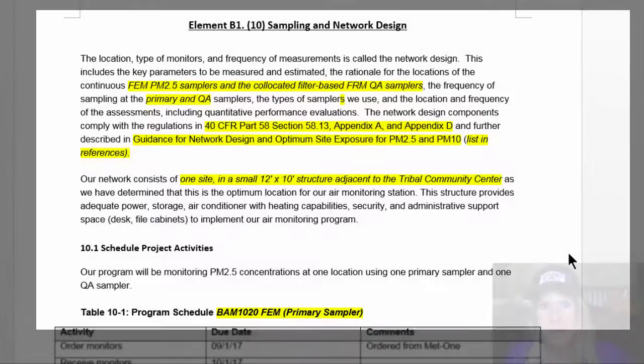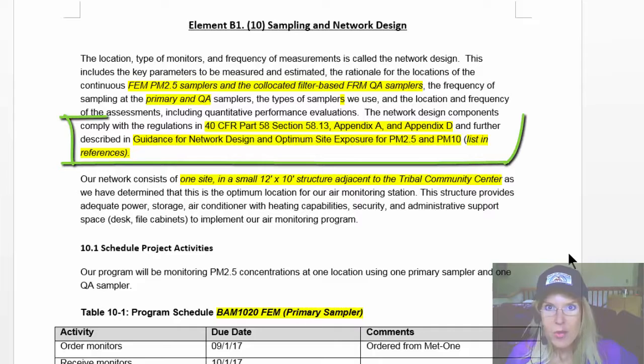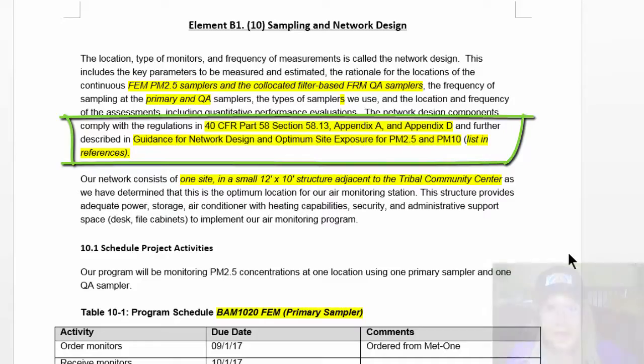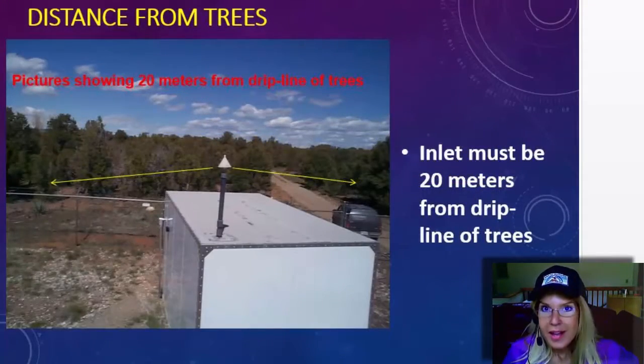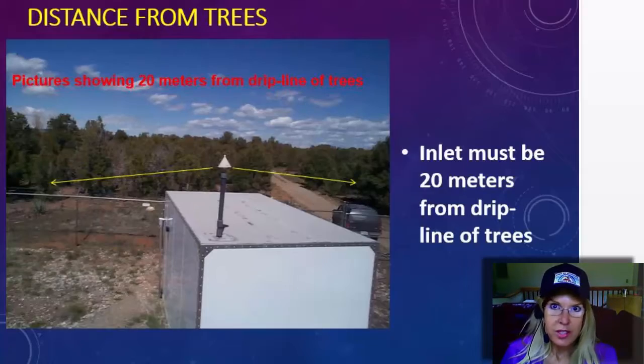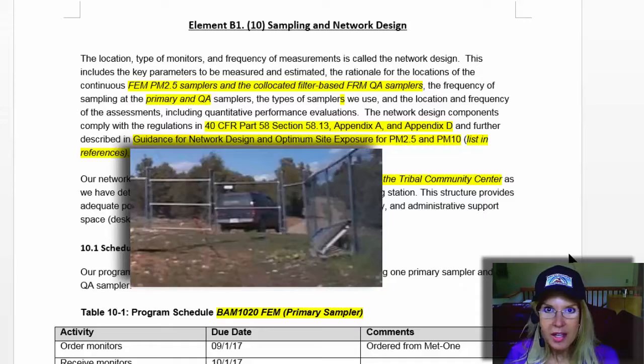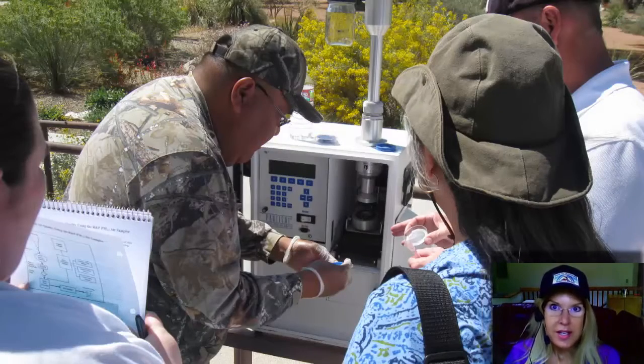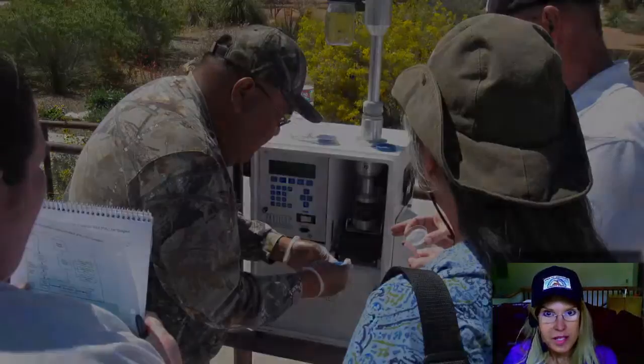So this section here describes why you're placing your monitors where you're placing them, how they meet the criteria if you're following the National Ambient Air Quality Standards requirements, then how your location meets those requirements, as well as logistical questions such as security. You need to make sure that it's behind a fence or locked, electricity, things that you're going to need to continue your sampling at the frequency that you need it to be done at.